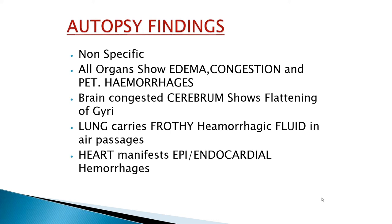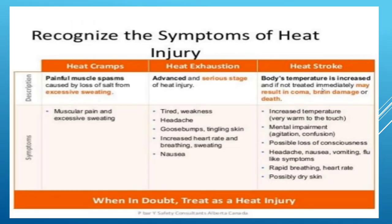Autopsy findings in heat stroke deaths are mostly non-specific. All organs show edema, congestion, and petechial hemorrhages. The brain is congested, with flattening of gyri and loss of normal sulci. Lungs show hemorrhages and fluid in air passages. The heart shows epicardial and endocardial hemorrhages.